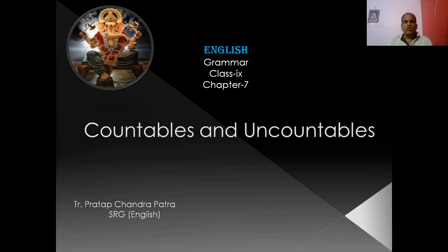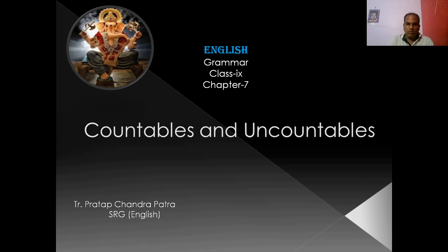Let us discuss countable nouns and uncountable nouns. We know nouns, the naming words — some of them are count nouns and others are uncount nouns. So what is a noun? Nouns are the naming words. A noun is a word used as the name of a person, place or thing.